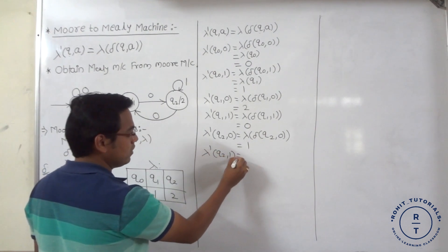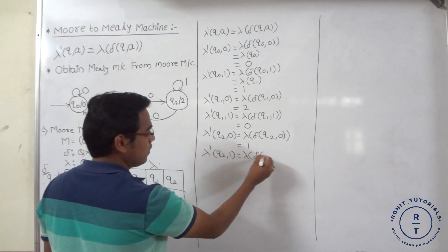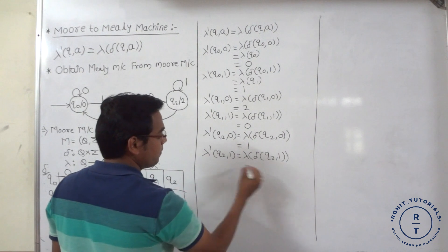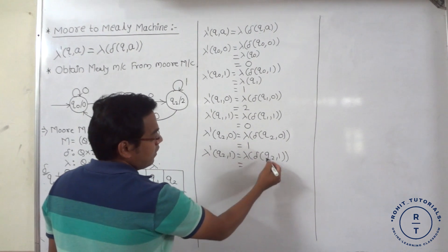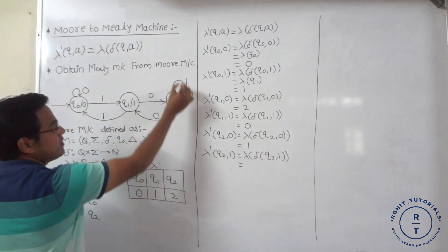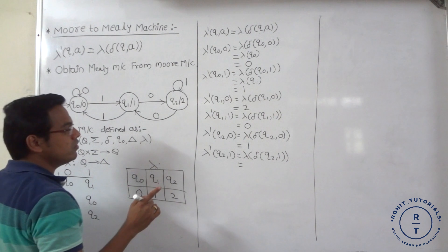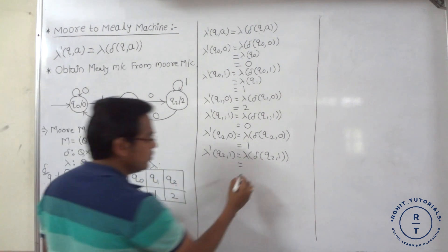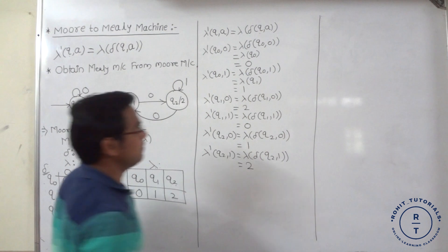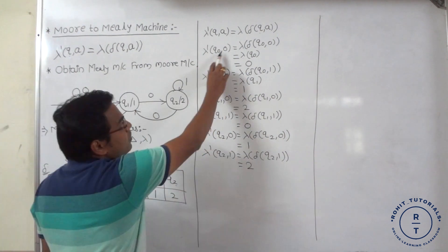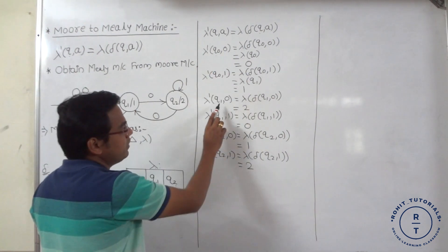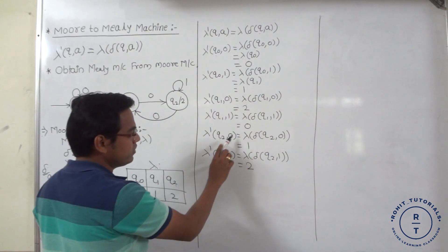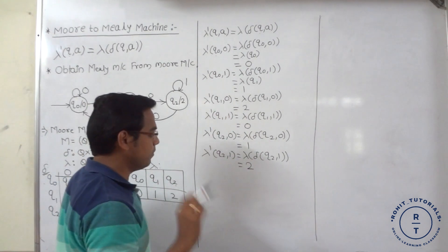And last, lambda dash(q2, 1): lambda of transition function q2 with input 1. At q2 state, when 1 occurs, there is a self-loop, that is q2. At q2 state, the output is 2. So lambda dash(q2, 1) = 2. So at each state — q0, q1, q2 — for inputs 0 and 1, the outputs are now completed.